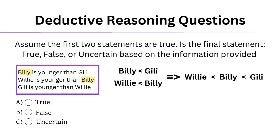Moving to our conclusion: Gilly is younger than Willie. And as we can see from our connected statement, this is false.